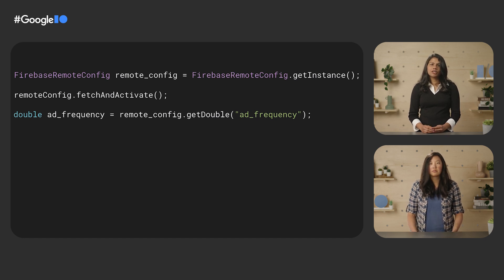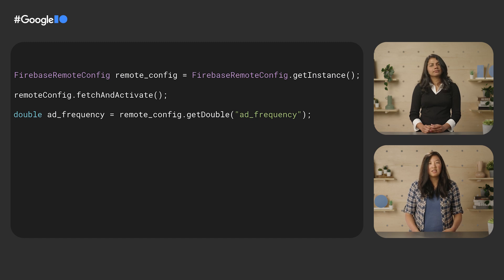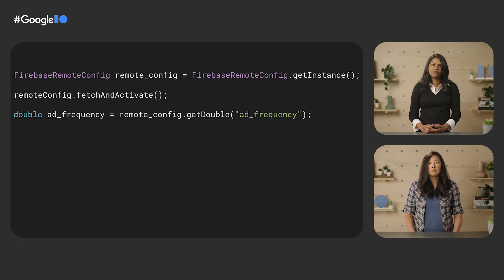I remember we set up an additional metric to track how user engagement time changes as a result of AddFrequency. Do I need to do anything with that? In this case, user engagement is already tracked with Google Analytics, so you don't need to do anything. Is there anything else I need to do? That's it in this case. But if you had picked a custom event for your objective or additional metric, you would need to fire those events in your code.